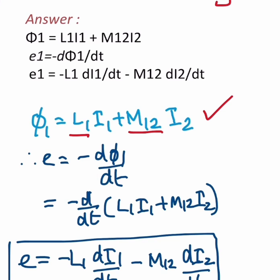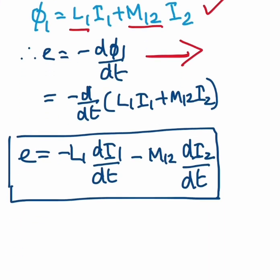Therefore EMF equals minus dφ1/dt. Here very clearly you have negative sign. Therefore negative sign will come for the whole equation, minus d/dt of (L1 I1 plus M12 I2).